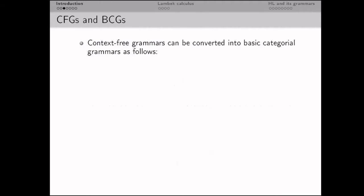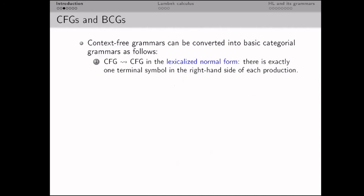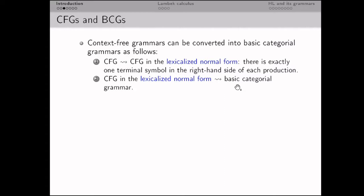It is known that context-free grammars can be converted into basic categorical grammars according to a two-step procedure. First, we convert a context-free grammar into an equivalent one in the lexicalized normal form, which requires exactly one terminal symbol in the right-hand side of each production. Second, given such a grammar in this normal form, we convert it into a basic categorical grammar according to a natural procedure.